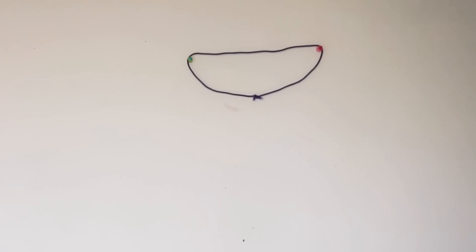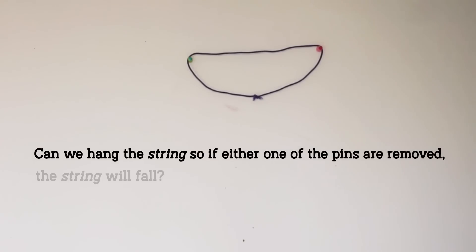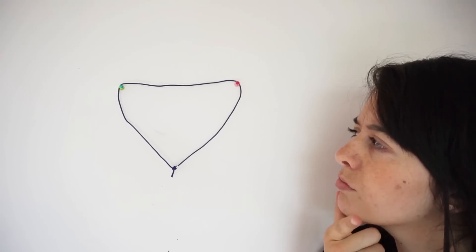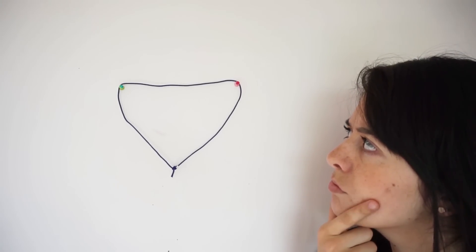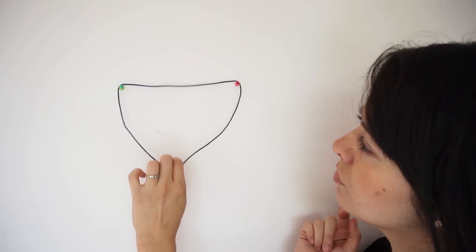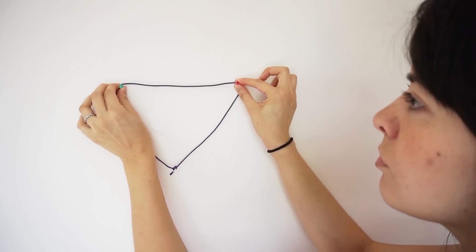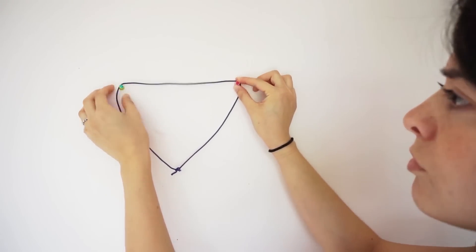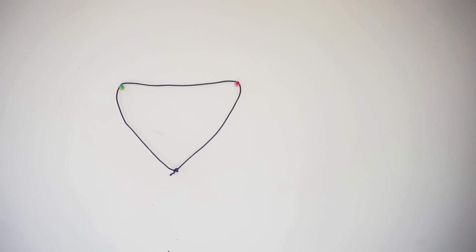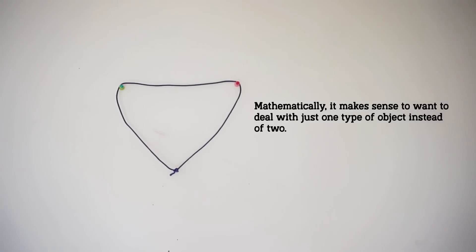we can reframe the question as: Can we hang the string so that if either one of the pins is removed, the string will fall? It's just a simpler version of the same question. Sorry, fashionable chicken. What else is unnecessary info? Let's take a look at these pins. Basically nothing matters about them except how they interact with the string, and the fact that they don't interact with each other. We don't care about their position, size, shape, or color. We don't even care that they're pins. Mathematically, it makes sense to want to deal with just one type of object instead of two.